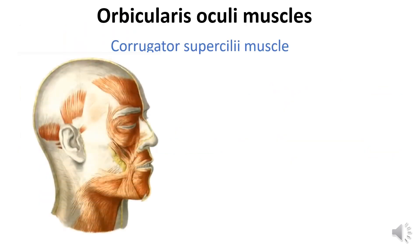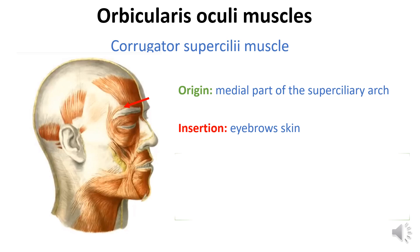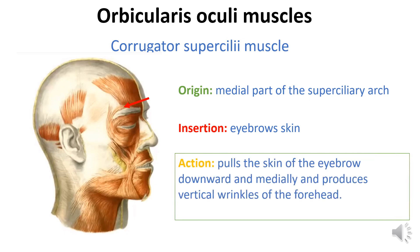Corrugator supercilii muscle: it originates from the medial part of the superciliary ridge and inserts into the eyebrow skin. The action of this muscle is pulling the skin of the eyebrow downward and medially, and it also produces vertical wrinkles of the forehead.